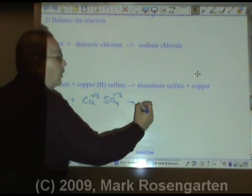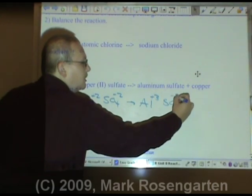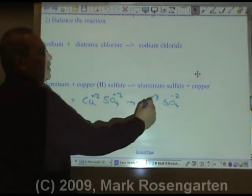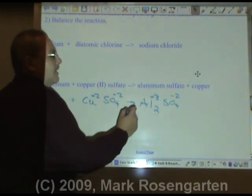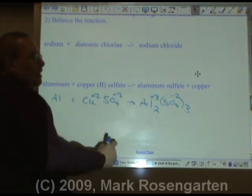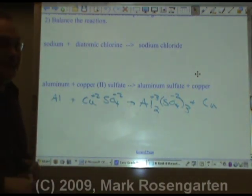Arrow. Aluminum is plus three. Sulfate is SO4. We already said it's minus two. Three times two is six. So we need two aluminums to make plus six. And we need three sulfates to make minus six. Plus copper, which is not a Brinkelhoff, so I don't make it Cu2.